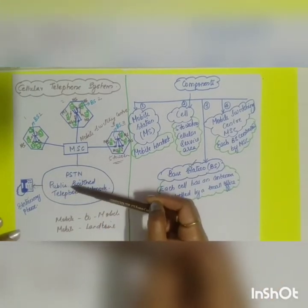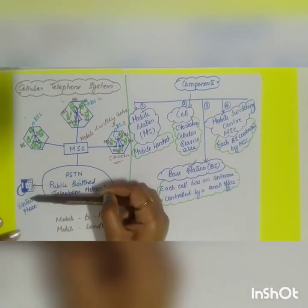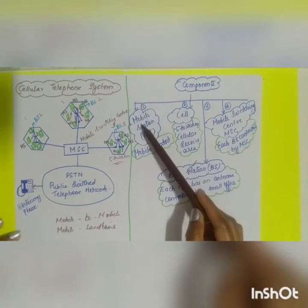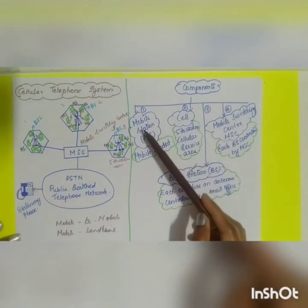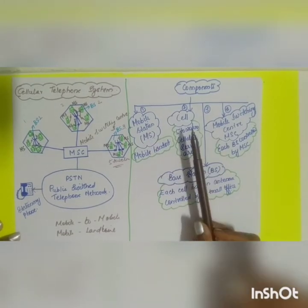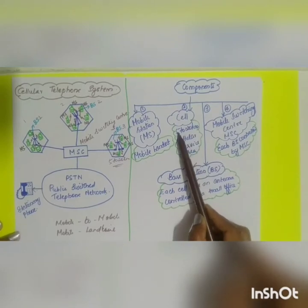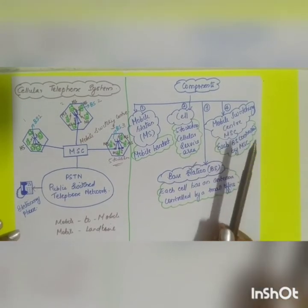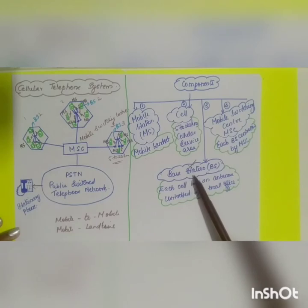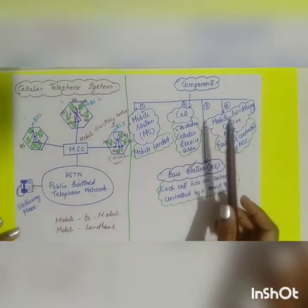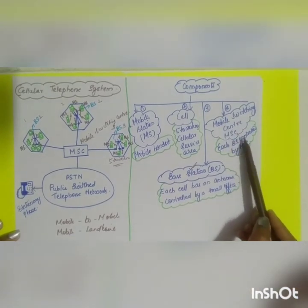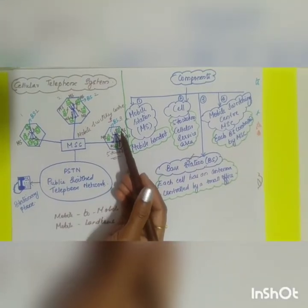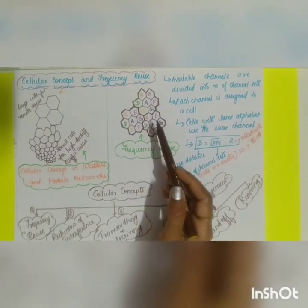The reason the MSC is connected to the PSTN — the public switched telephone network — is for mobile-to-landline communication. If a call is made from a mobile phone to a landline, it routes through the PSTN to reach the stationary phone. The overall cellular telephone system has four main components: the mobile station (the handset), the cell (a service area of about 5 to 20 kilometers), the base station (an antenna controlled by a small office), and the mobile switching center (MSC).